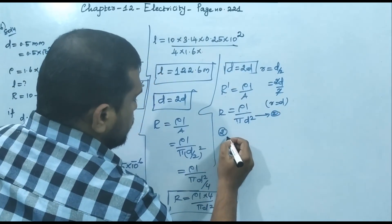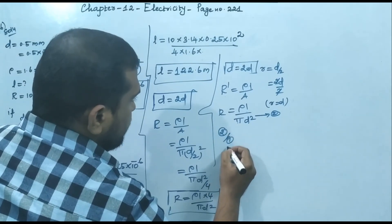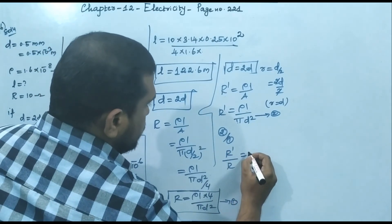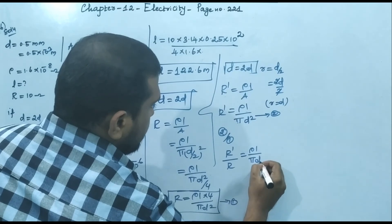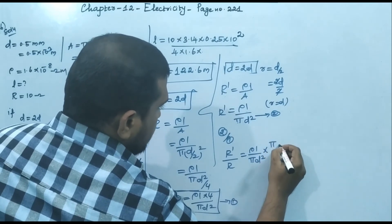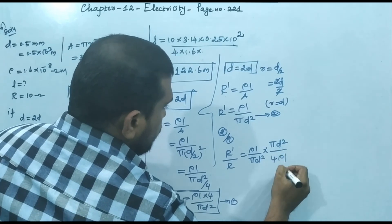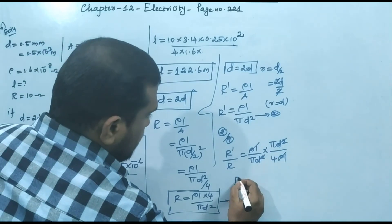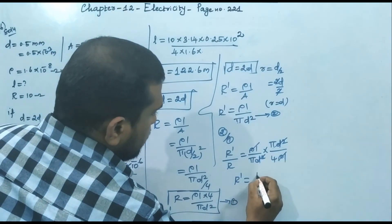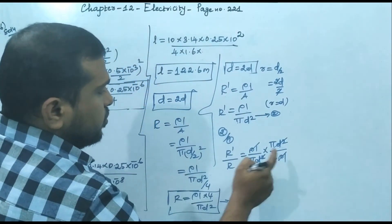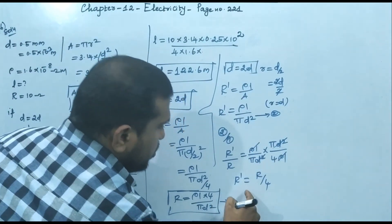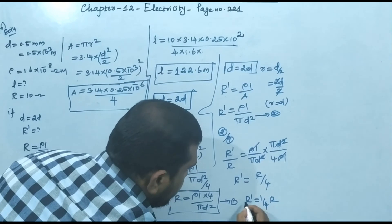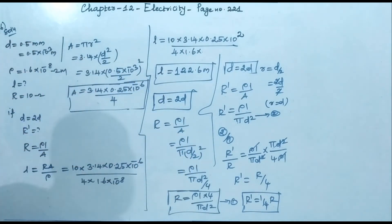Dividing equation 2 by equation 1: R'/R = (ρL / πd²) × (πd² / 4ρL). The terms ρL and πd² cancel, leaving R'/R = 1/4. Therefore the new resistance R' = R/4, meaning it becomes one-fourth of the original resistance.